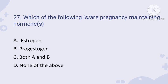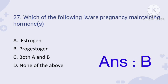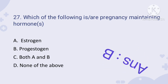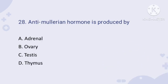Question number twenty-seven: which of the following is the pregnancy-maintaining hormone? The correct answer is progesterone — option B. Progesterone maintains the pregnancy.